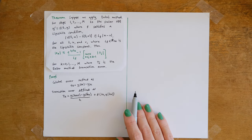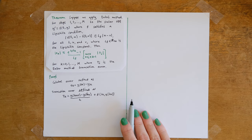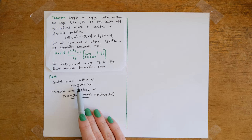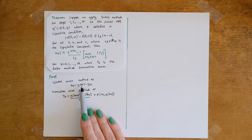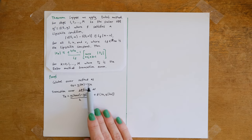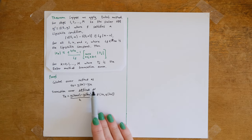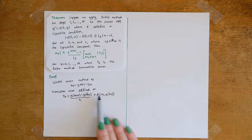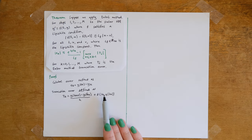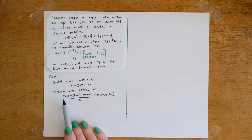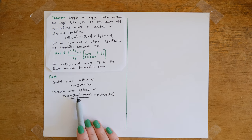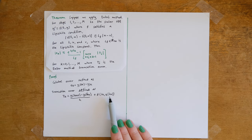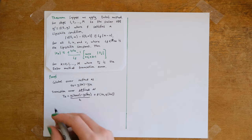Let's now prove this result. We define the global error e_k = y(t_k) − y_k, and we define the truncation error by substituting our mathematical solution into our numerical scheme: T_k equals y(t_{k+1}) minus y(t_k) divided by h, plus f(t_k, y(t_k)).